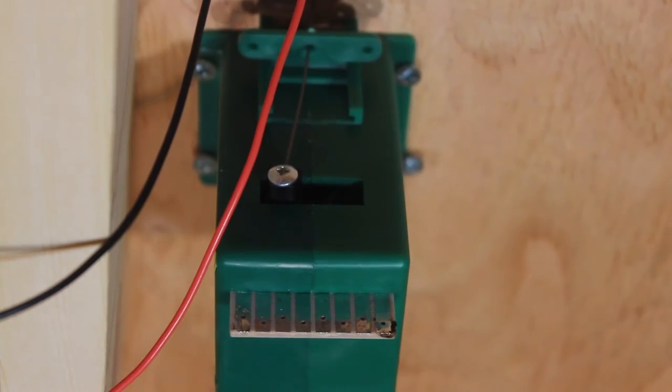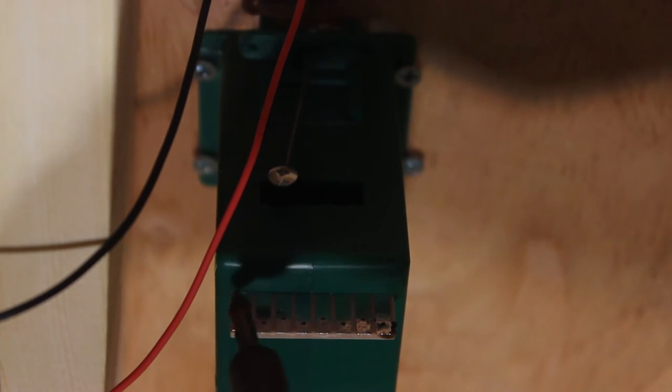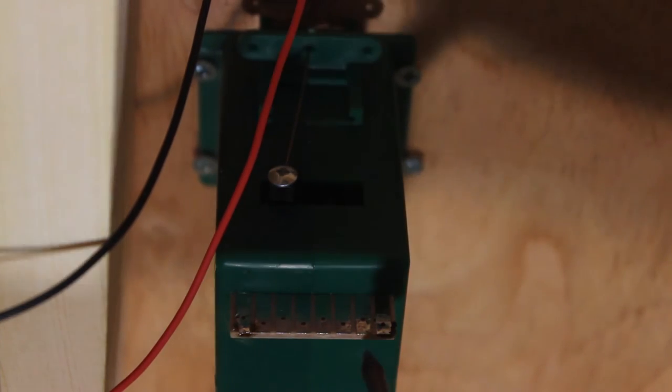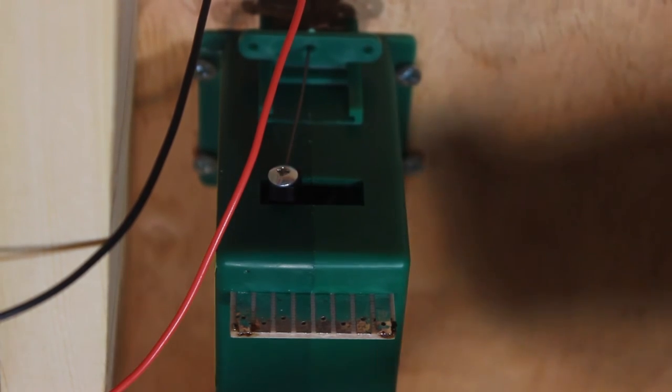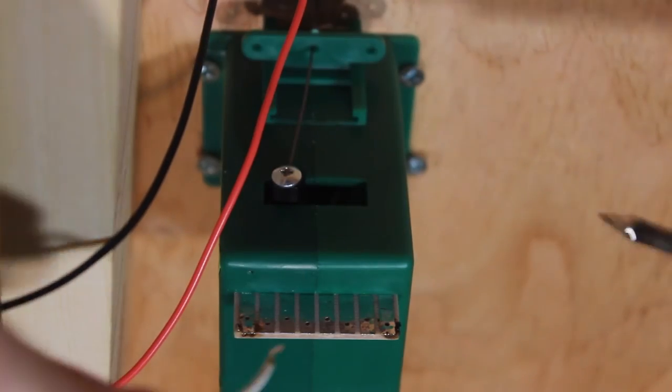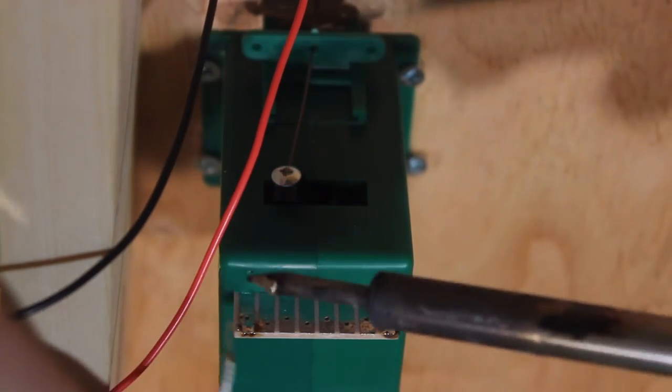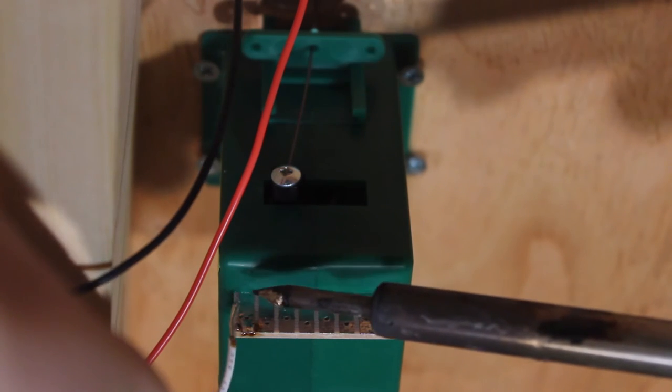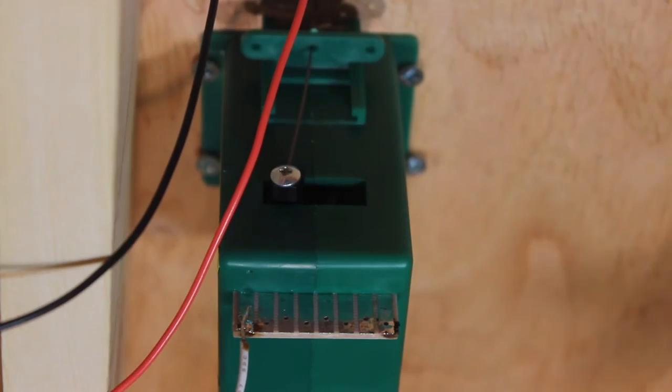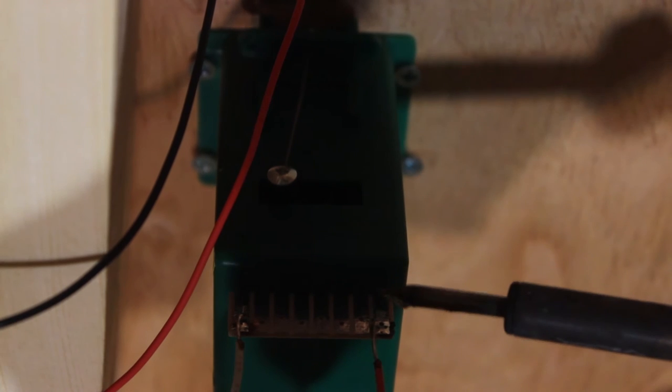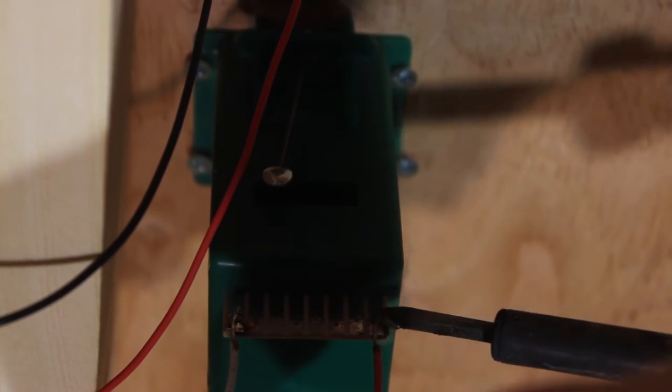I'm going to get this other one here. And now we will just solder one wire to each side. There's one. Make sure it's on there good. Then we get the other one. There's that other one.